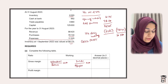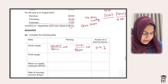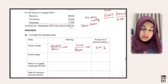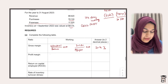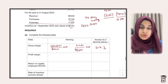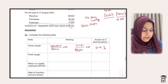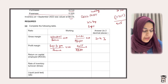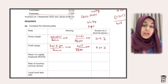Then they ask for profit margin. The formula is profit for the year divided by revenue multiplied by 100. Taking gross profit of 20,380 and subtracting expenses of 11,325 gives profit for the year of 9,055. So 9,055 divided by 98,420 multiplied by 100 gives a profit margin of 9.20% when rounded to two decimal places.